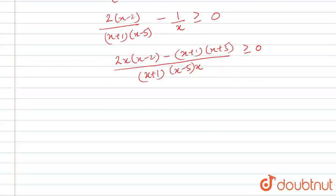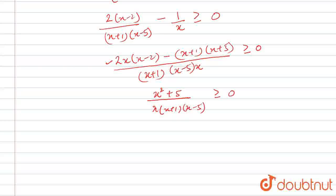So we get this condition. If we solve the numerator, we get x squared plus 5, divided by x(x+1)(x minus 5), is greater than or equal to 0.